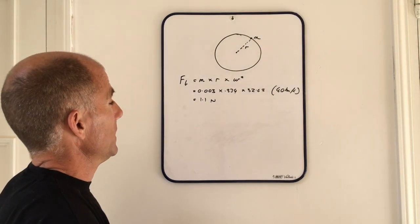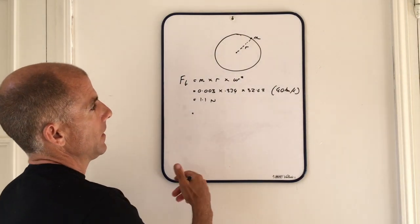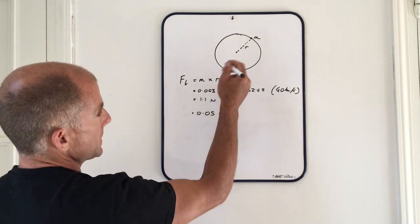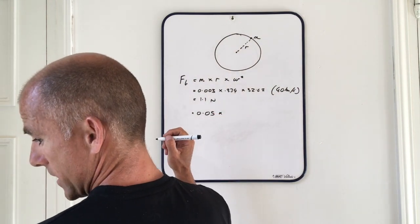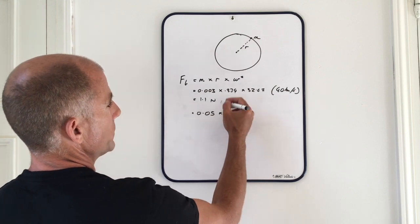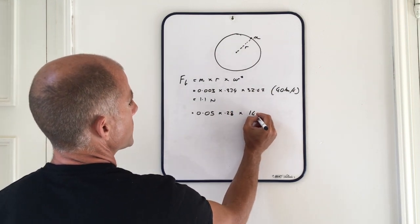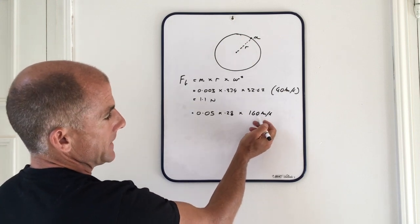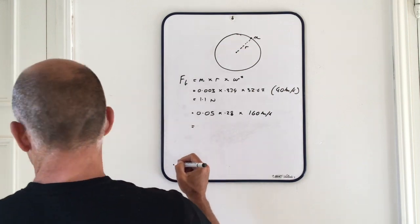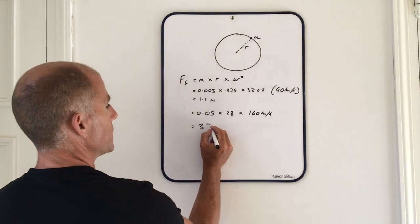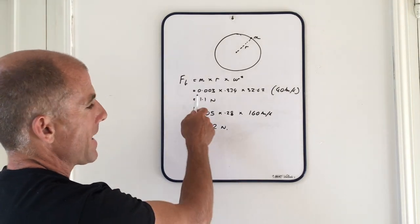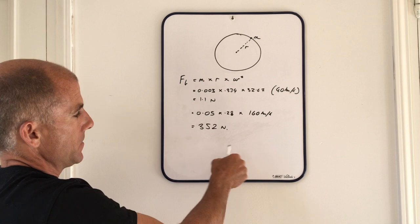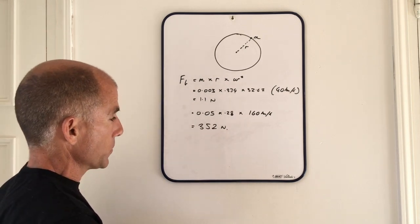Yeah, you know, if we put in the equivalent figures for a motorbike - I mean, I used to have motorbikes - a more realistic weight would be something like 50 grams. The radius is slightly smaller; I used 0.28 of a meter for a slightly smaller wheel. And I used the equivalent of 160 kilometers an hour, converted to radians - quite high speed. But most motorbikes can go easily that fast. And what this gives you is 352 newtons. So you can see it's massively more - you can't compare the two. It is huge as a figure compared to this one. So clearly you need to balance this wheel, and that's why it's done.